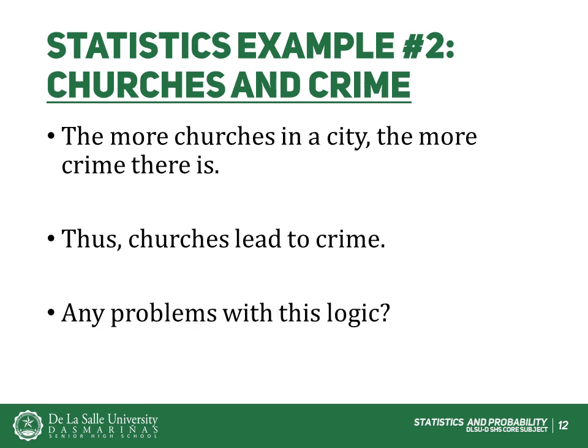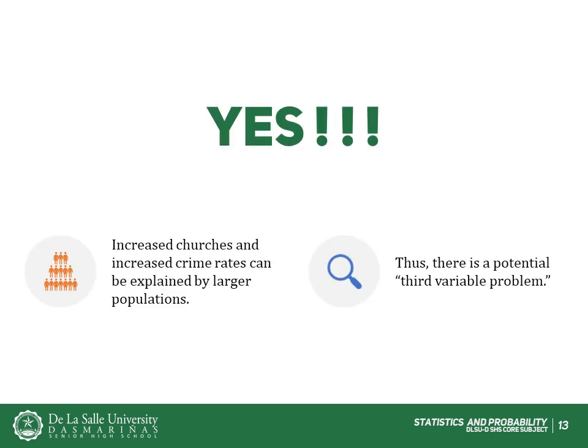Are there any problems with this logic? Yes. A major flaw is that both increased churches and increased crime rates can be explained by larger populations. In bigger cities, there are both more churches and more crime. This problem refers to the third variable problem — namely, a third variable can cause both situations. However, people erroneously believe that there is a causal relationship between the two primary variables rather than recognizing that a third variable can cause both.